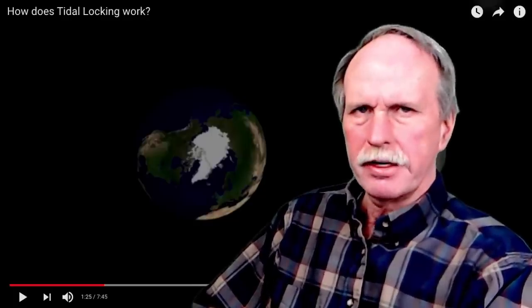So now that we know what tidal locking is, let's understand why it occurs. It's actually not that difficult to understand. The moon is held to the Earth by gravity. We have gravity attracting the mass of the Earth to the moon and the mass of the moon to the Earth. It forms a line of gravitational attraction between the two. This line is not anchored at the center of the Earth and the center of the moon. Those anchor points are moved inward a little bit and closer together.